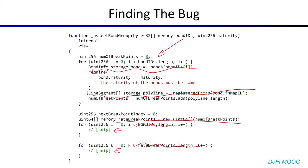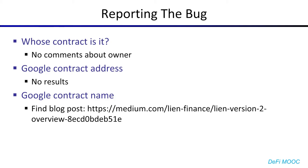So my next step was to find out whose contract it was. Unfortunately, there weren't any comments in the contract that would lead me to any hints about who the owner was — usually there's a copyright header or a website link or something, but in this case there was none of that. I tried Googling the contract address and there were also no results. Typically you might find that in an announcement blog post the protocol would post the address. I tried Googling the contract name and from there I found a blog post which led me to the protocol, Lean Finance.